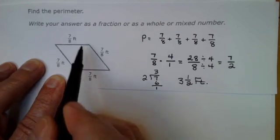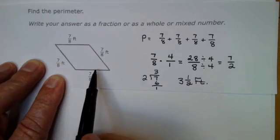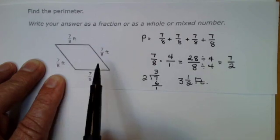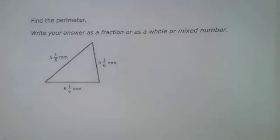So if it has the same number, I can multiply it by however many sides there are, as long as it's the same number. Let's look at an example where the numbers on the sides are not the same. Again, to find the perimeter, I need to add all the sides up.